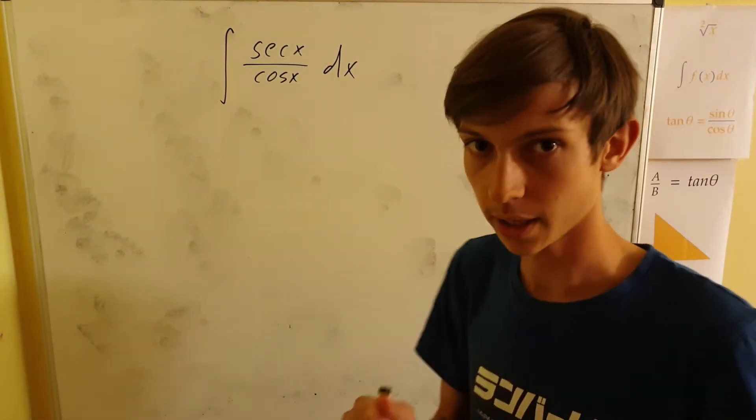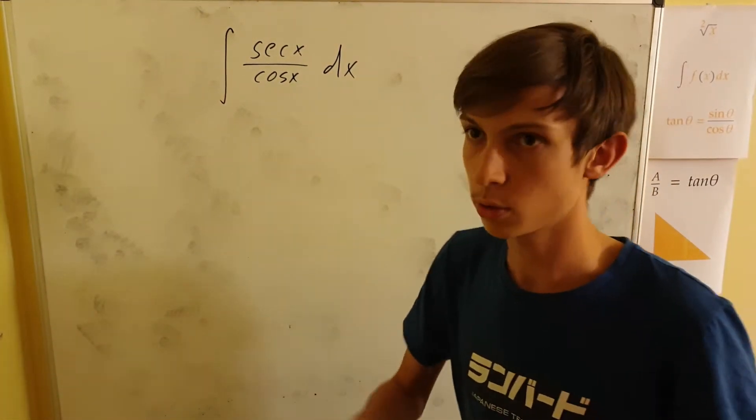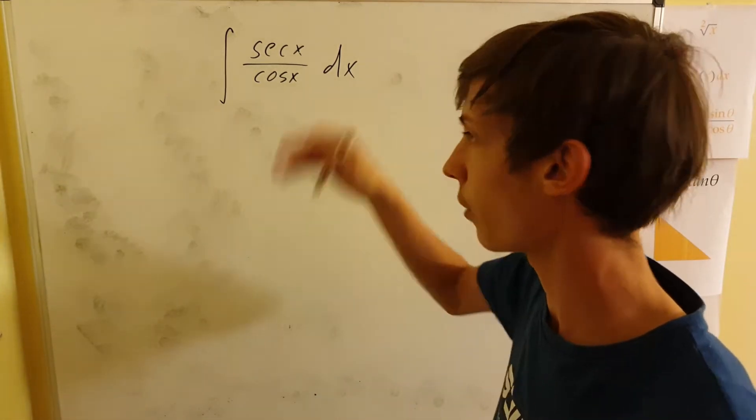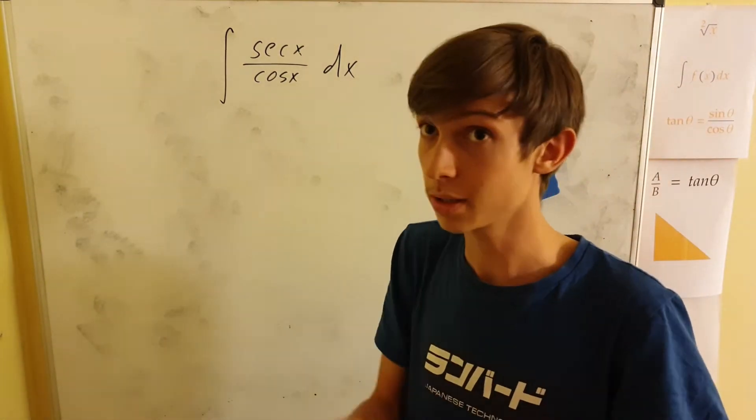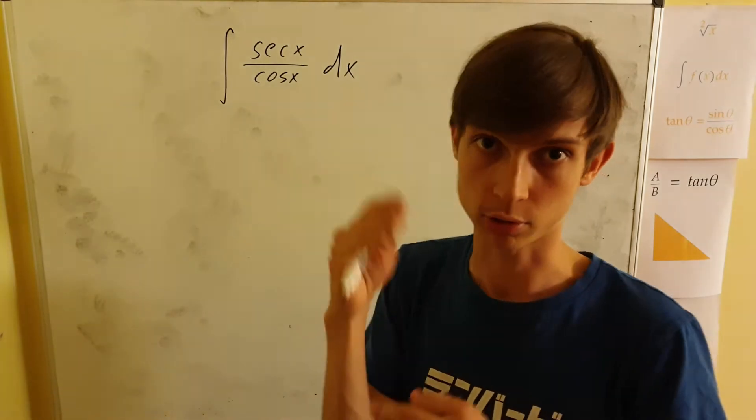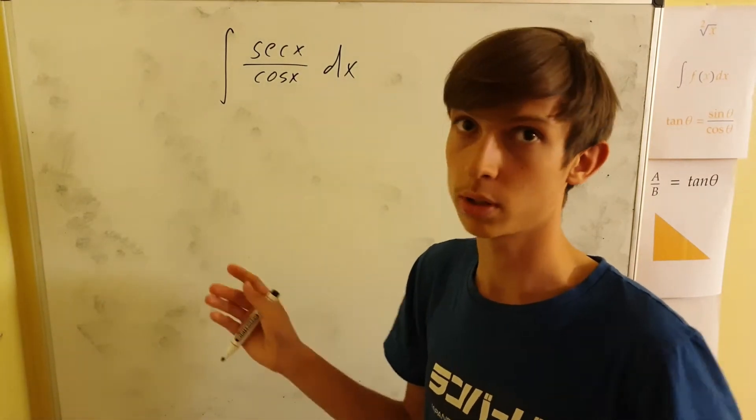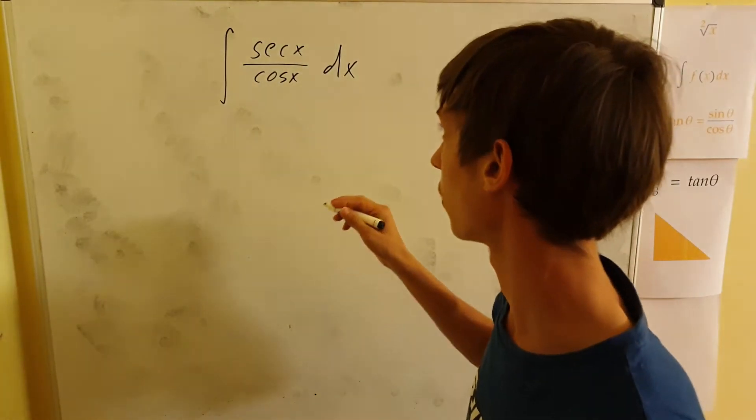Greetings. We have the integral of secant x over cosine x, and before we start solving, we should first think about how we can rewrite the argument to make this more solvable and easier to get the result.